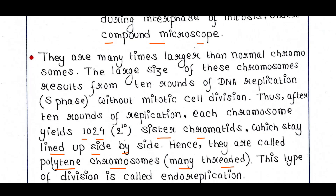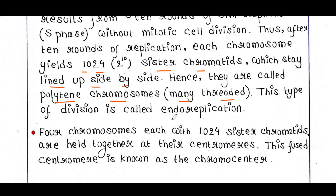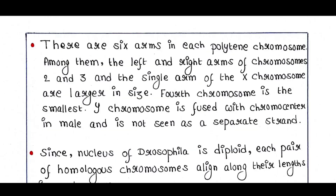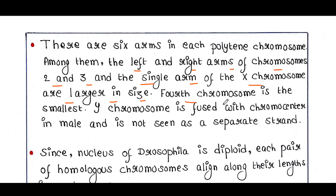This type of division is called endoreplication. Four chromosomes, each with 1024 sister chromatids, are held together at their centromeres. This fused centromere is known as the chromocenter. There are 6 arms in each polytene chromosome — the left and right arms of chromosomes 2 and 3, and the single arm of the X chromosome are larger in size, while the 4th chromosome is the smallest.